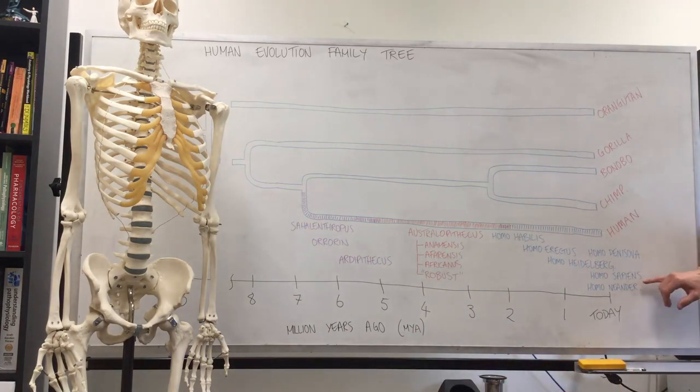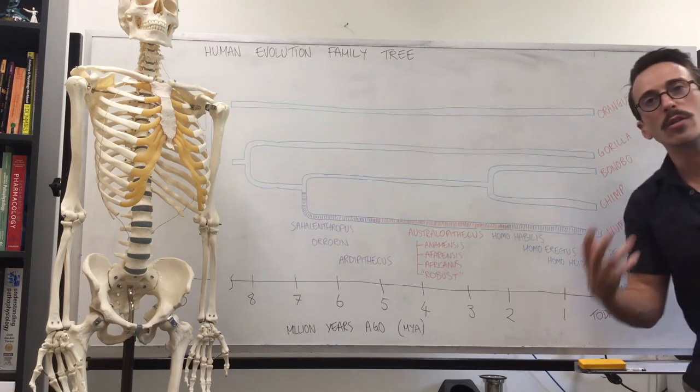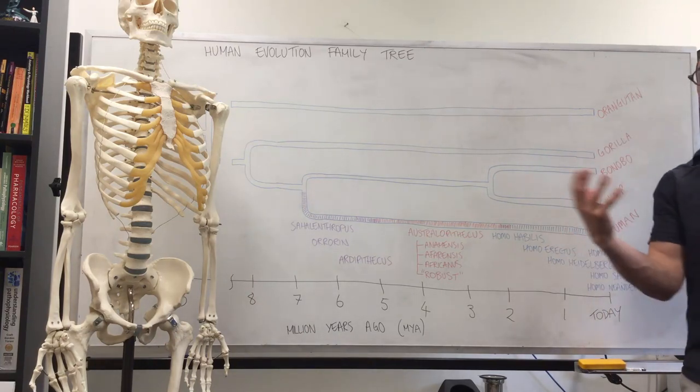So did the Denisovans, so did the Neanderthals, and we actually interbred with both the Denisovans and the Neanderthals. And for some reason, which we don't know yet, we out-competed them or we killed them all off.